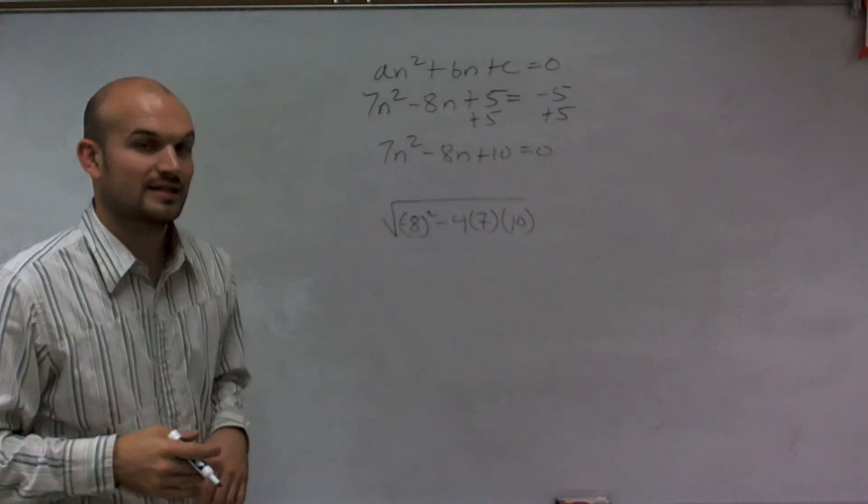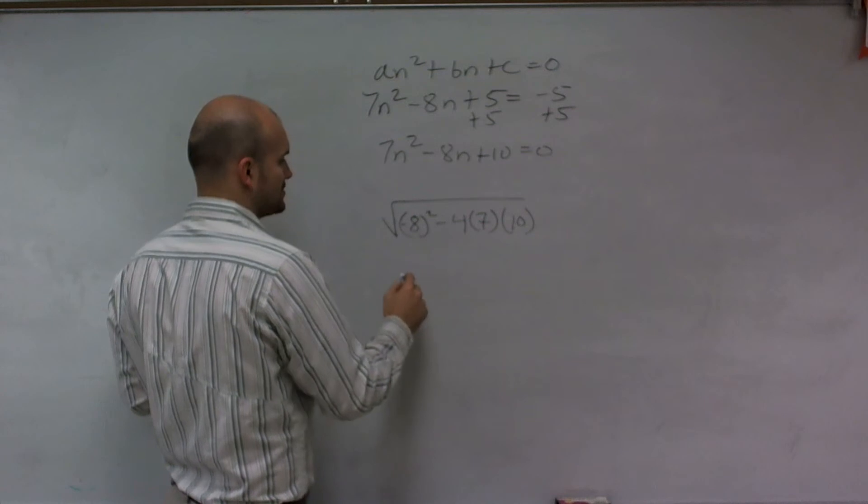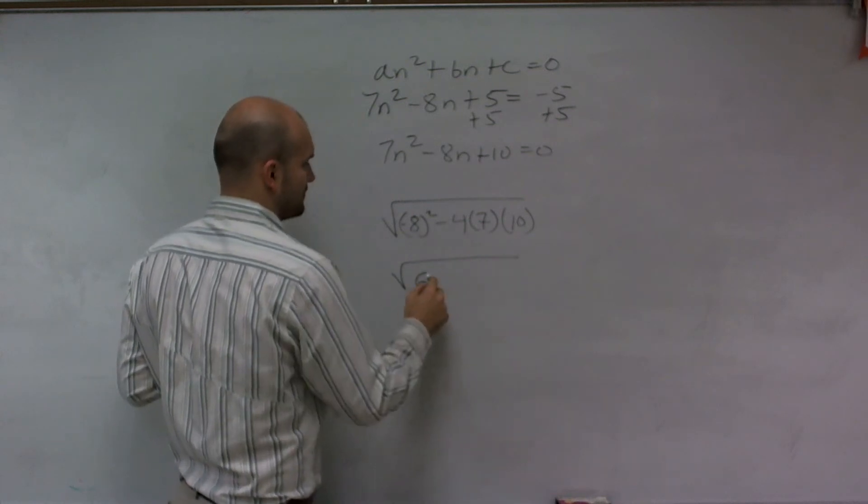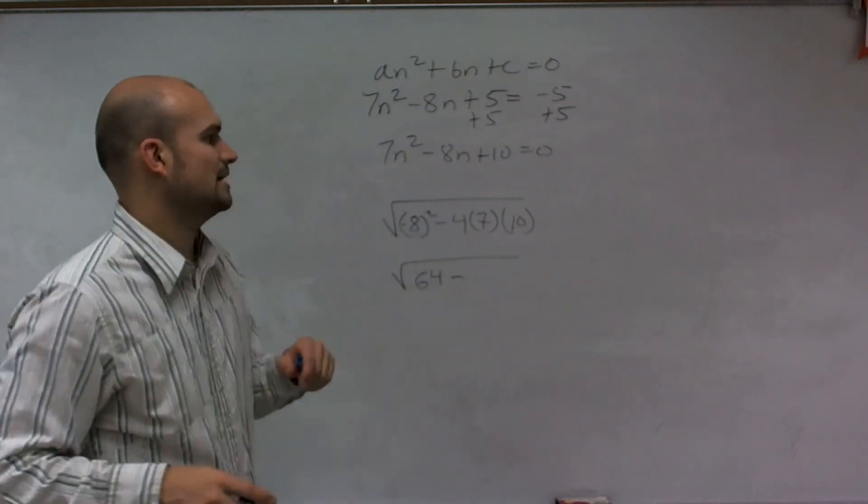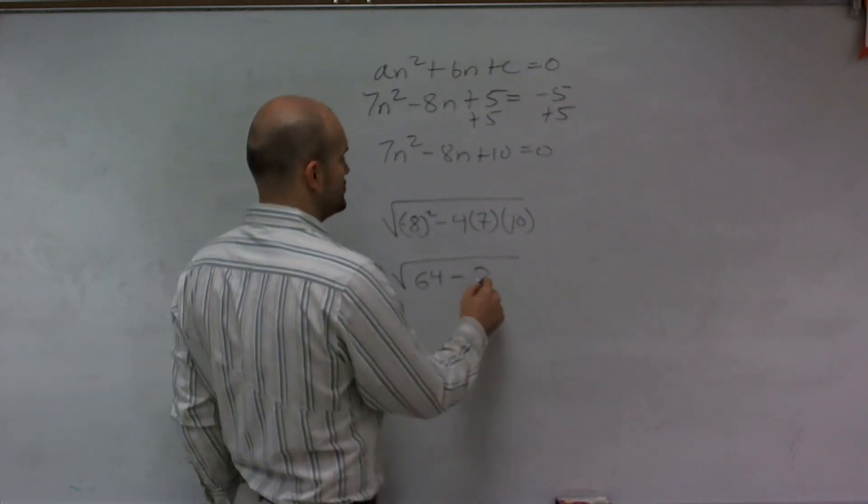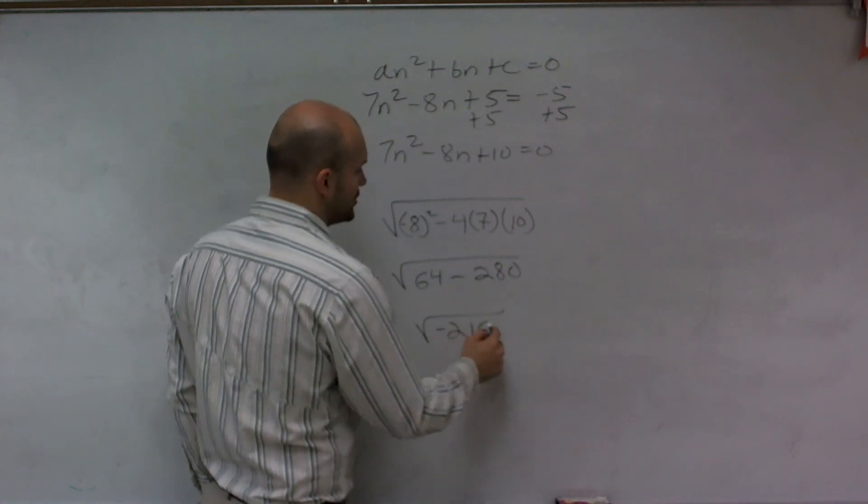So I need to go ahead and take a look at this and see what my answer is going to be. So I have 8 squared, which is going to be 64, minus 4 times 7 times 10, which is going to be 280. And what I notice here is I get negative 216.